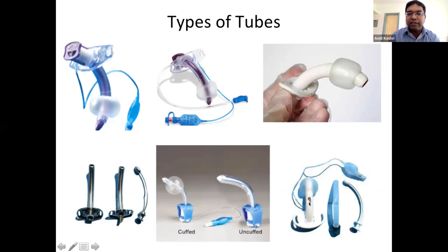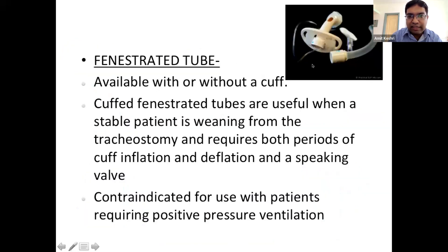Fenestrated tubes are very important. A fenestrated cuff allows air to leak through the fenestra, enabling a patient with near-normal vocal cords to speak. You can even make a fenestra at the highest point of the curvature in a standard tube to convert it into a fenestrated tube — this saves cost, as the commercial fenestrated tube costs twice as much. Fenestrated cuffed tubes are useful when a stable patient is weaning from the tracheostomy and requires periods of both cuff inflation and deflation with a speaking valve. Contraindication is positive pressure ventilation due to air leakage.